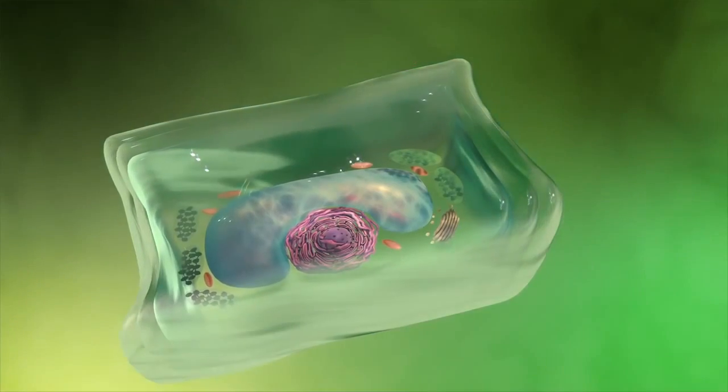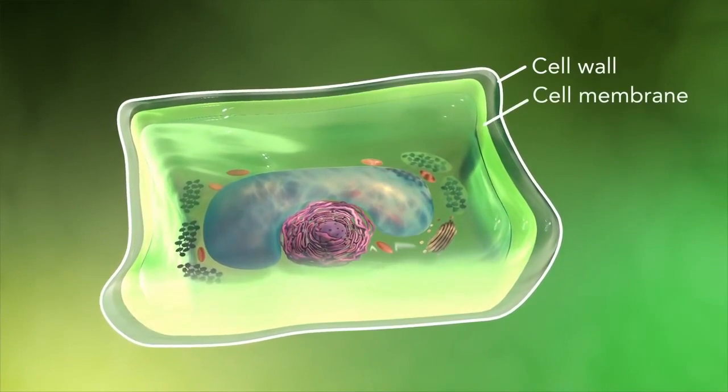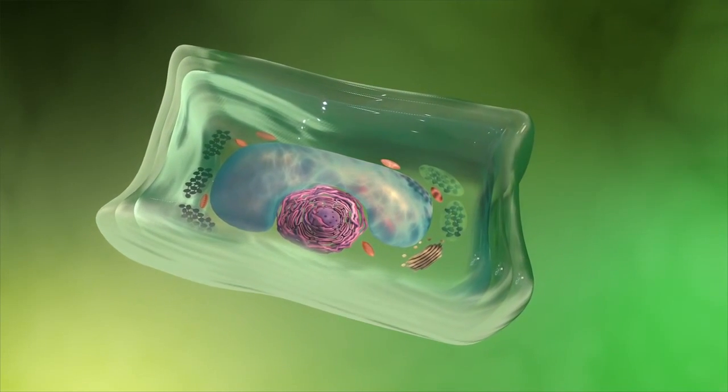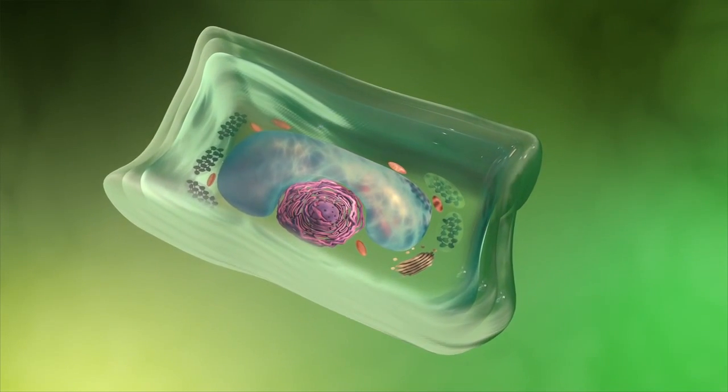Plant cells also have a cell wall outside of their cell membranes that shape, support, and protect the plant cell. Animal cells never have a cell wall.